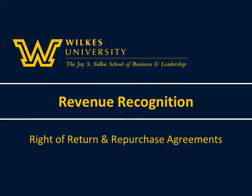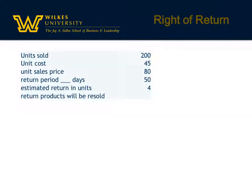Here are some revenue recognition examples regarding the right of return and repurchase agreements. Companies recognize that their customers may not always be satisfied with the product and usually provide the ability to return it within so many days. This right of return is guaranteed for certain products under the company's policy. When that happens, the customer can receive a full or partial refund, store credit, or another product in exchange for the returned product.